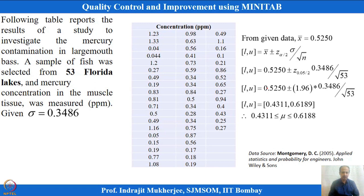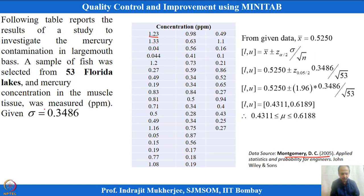Here is an example to demonstrate how MINITAB builds the confidence interval. It involves an investigation of mercury contamination: a sample of fish was selected from 53 Florida lakes and mercury concentration in muscle tissue was measured in PPM. This dataset is taken from Montgomery's book, and the population standard deviation value is given.